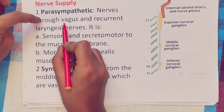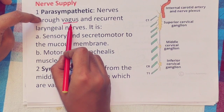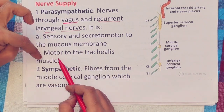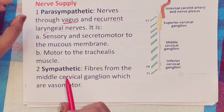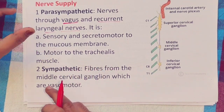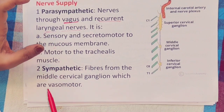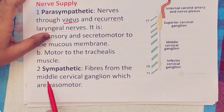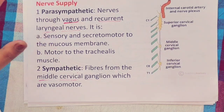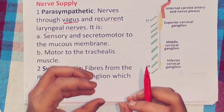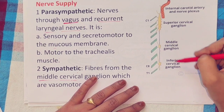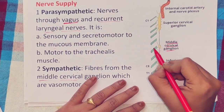Nerve supply: parasympathetic supply comes through the vagus nerve, which is the 10th cranial nerve. A branch of the vagus nerve — the recurrent laryngeal nerve — provides sensory and secretomotor supply to the mucous membrane and motor supply to the trachealis muscle. Sympathetic supply comes from the middle cervical ganglion, one of the three cervical sympathetic ganglia.